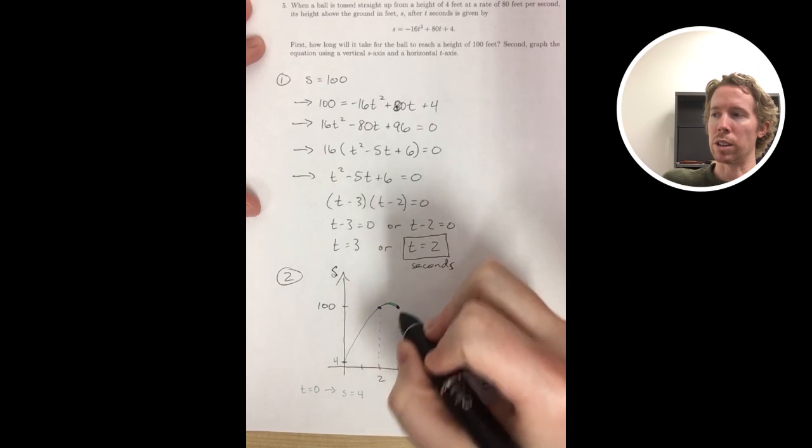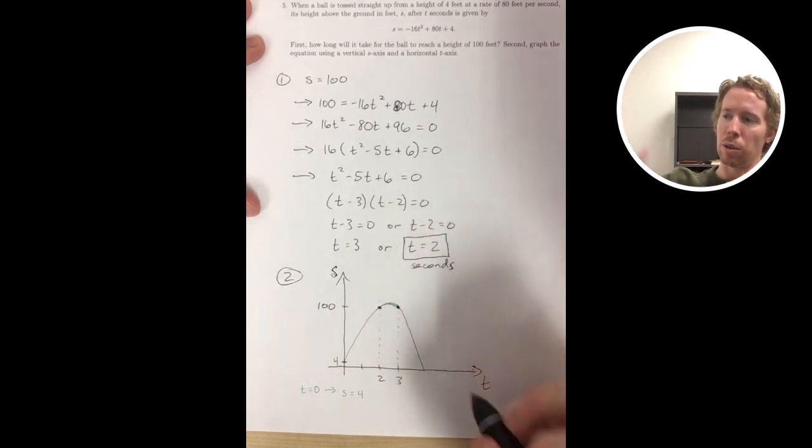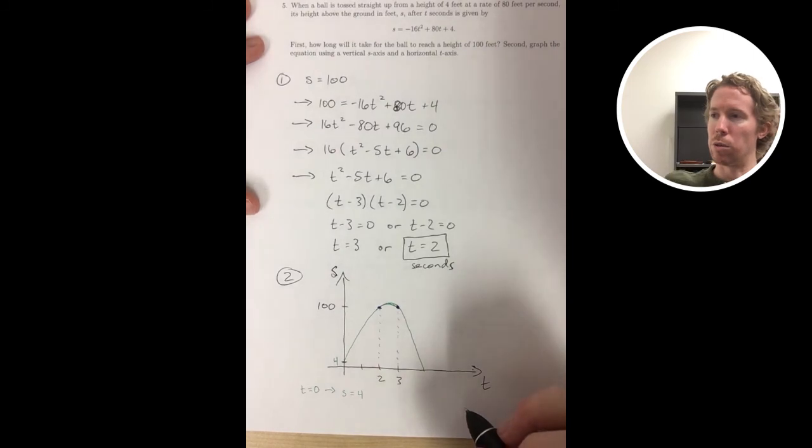When we had money earning simple interest, that was a linear model. When you fire an object up, you throw it, you keep track of it, that's a quadratic model.